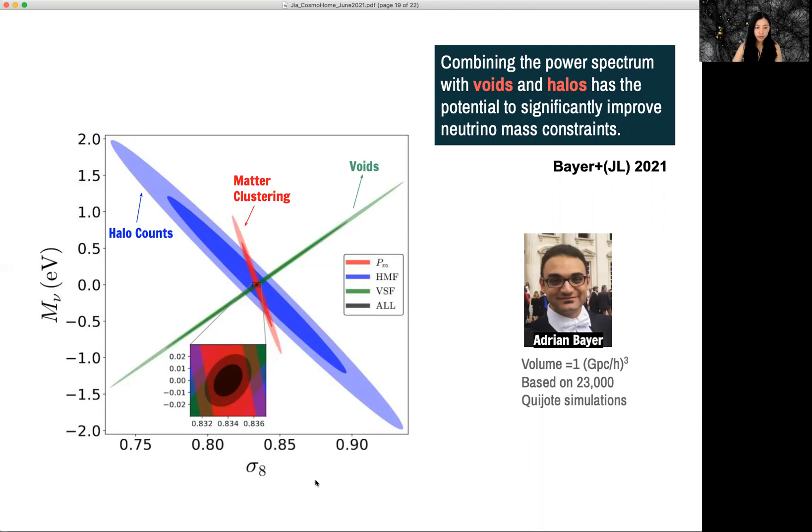So what we found is that matter clustering on its own is still more powerful than the two other statistic. However, in the parameter space of schema eight and the neutrino mass,